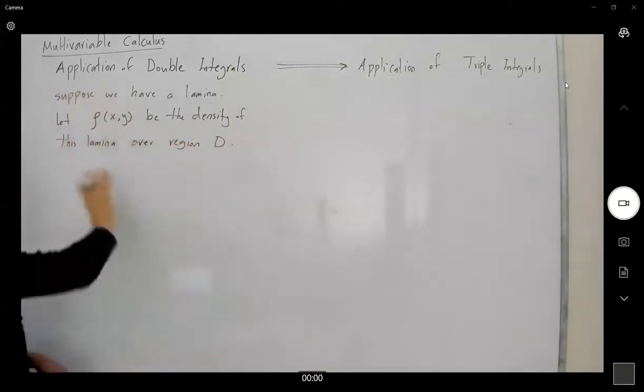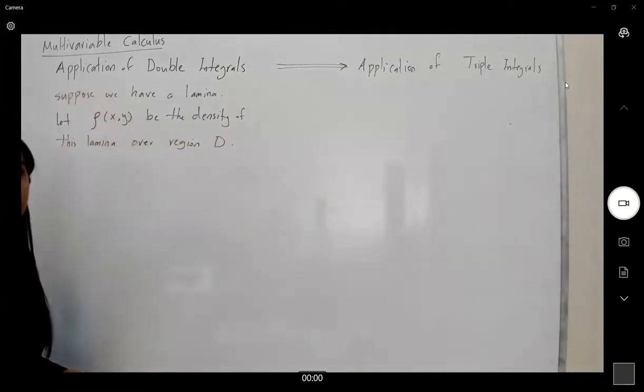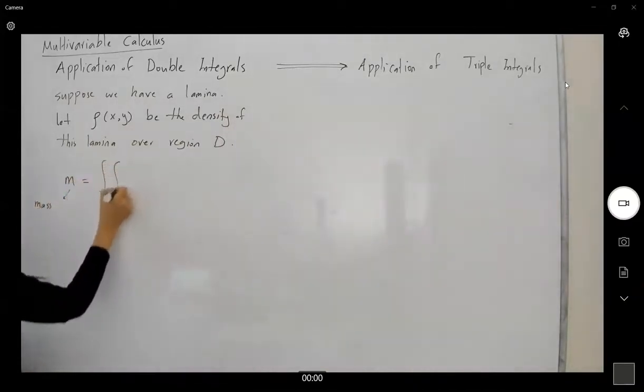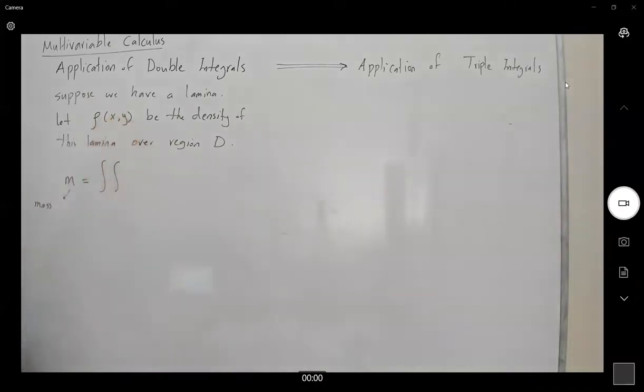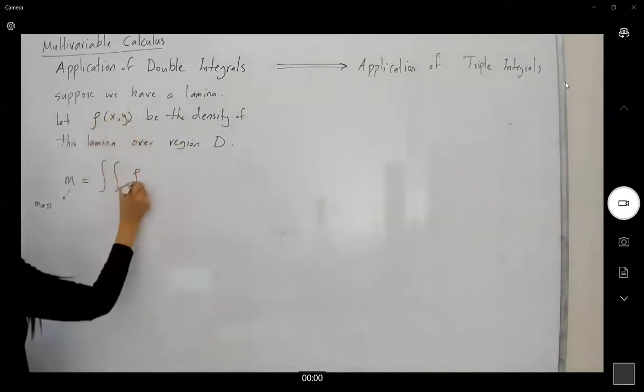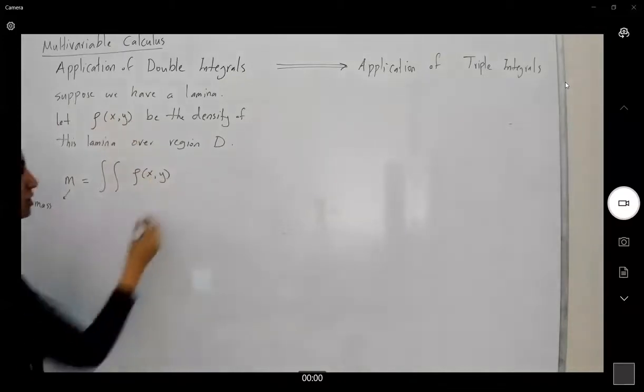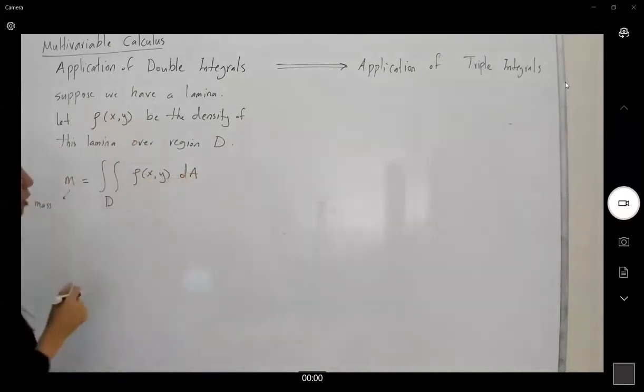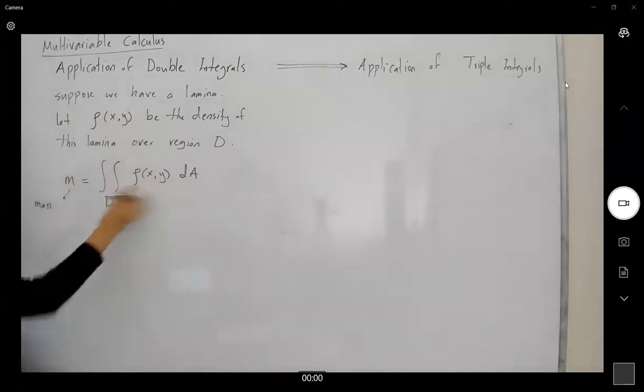We can use this density and find the mass of this lamina. So the mass of the lamina is equal to the double integral. Remember that you have the density function, which is rho(x,y). Remember that this function is continuous. For us to be able to define the double integral, we have a continuous function.